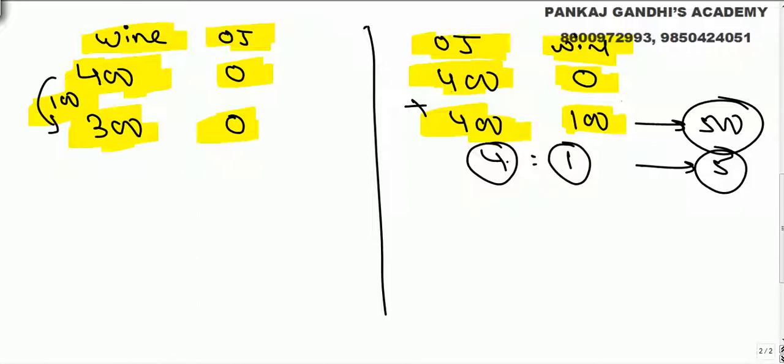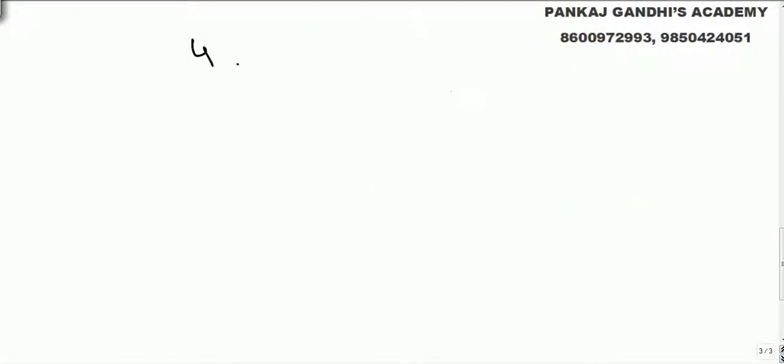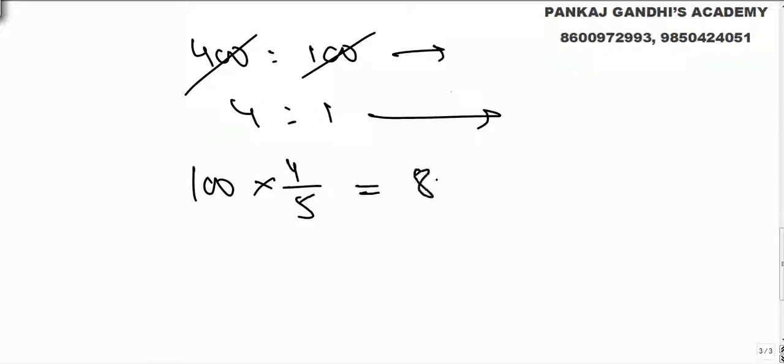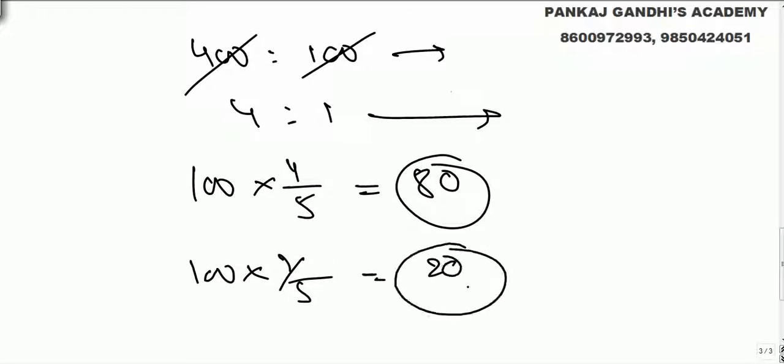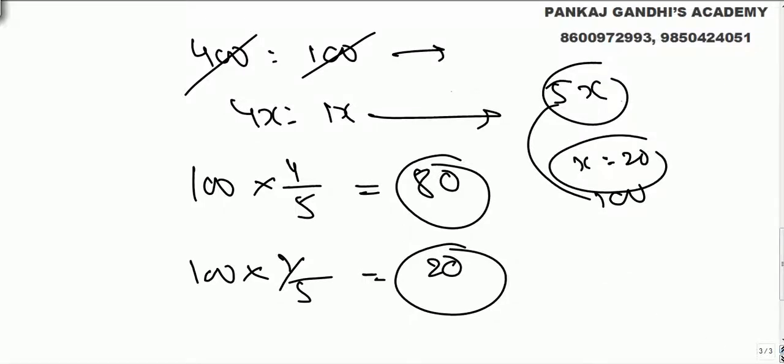4x, 1x, total 5x. Total we take out 100. No need to say when we take out 100 from here. Now ratio is 400 grams, 4 fifth of that will be orange juice and 1 fifth will be wine. Or we can say 4x, 1x, total 5x, total 100, x value 20, 80.